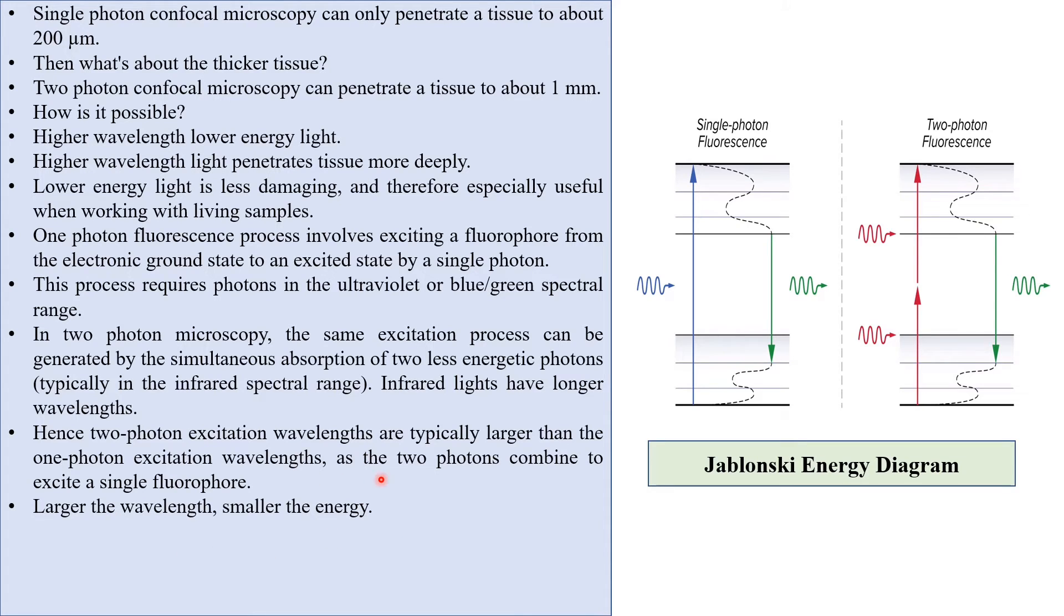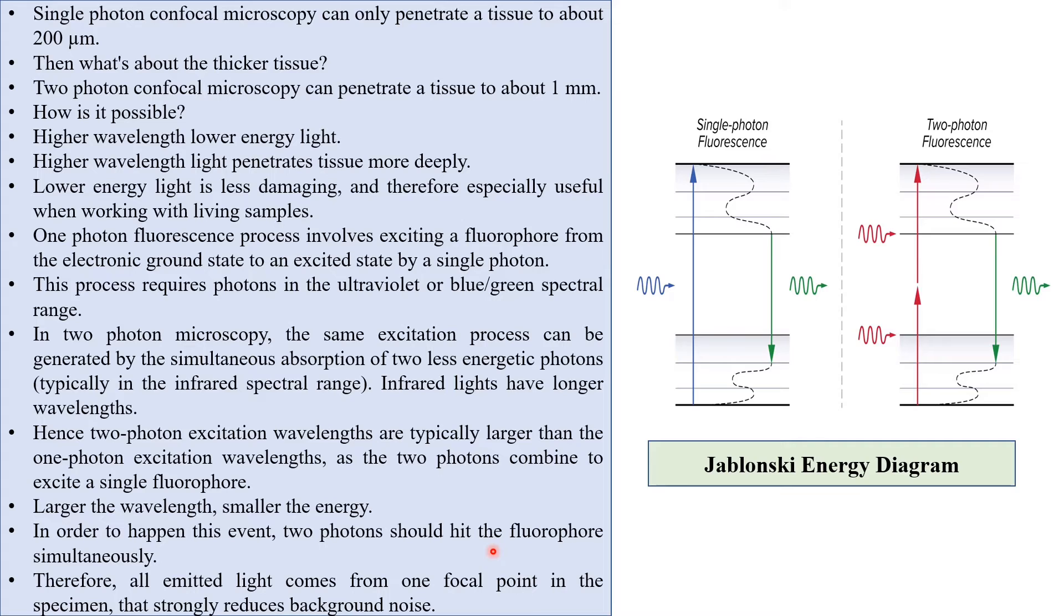Larger the wavelengths, smaller the energy. In order for this event to happen, two photons should hit the fluorophore simultaneously. Therefore, all emitted light comes from one focal point in the specimen, which strongly reduces background noise.